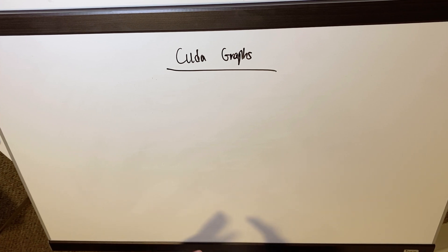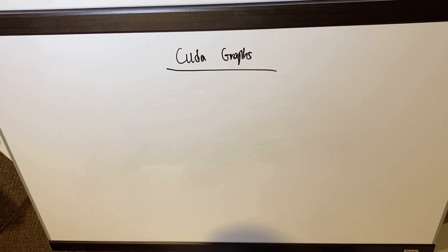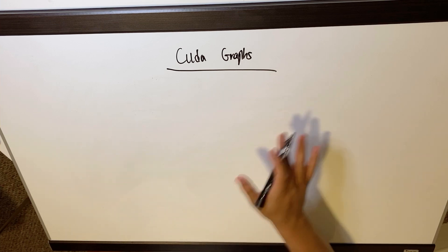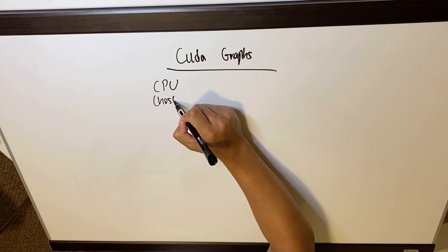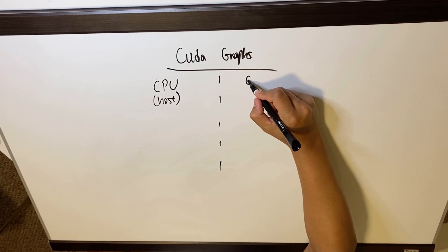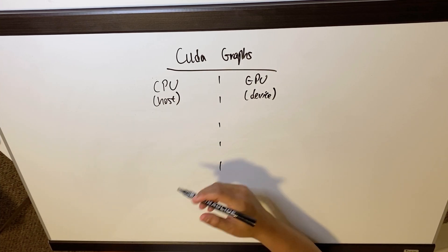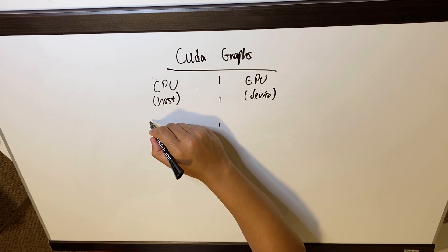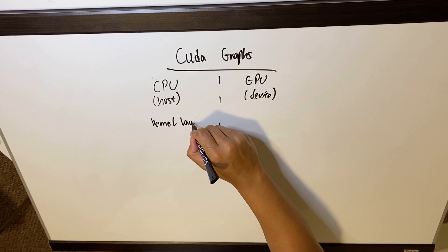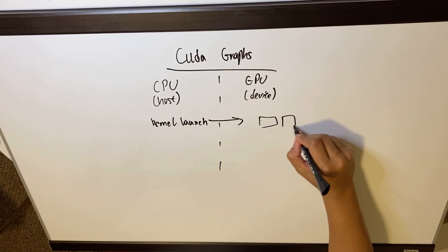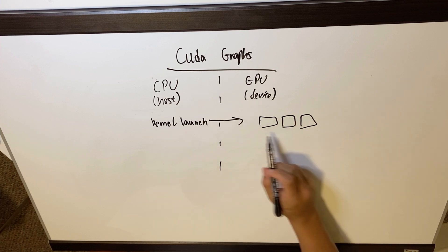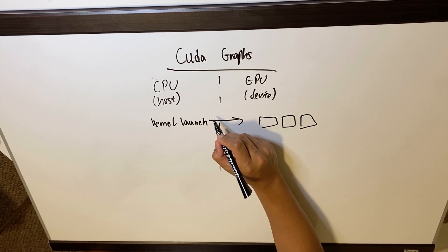CUDA is the proprietary GPU programming language of NVIDIA. If you want to do parallel processing and make your application faster, the world is moving to processing on the GPU because you can do things simultaneously and in parallel. In CUDA coding or parallel processing, you have two worlds to manage: the CPU side, also called the host side, and the GPU side, also called the device side. The kernel launch is initialized on the CPU side and then it actually happens on the GPU side.